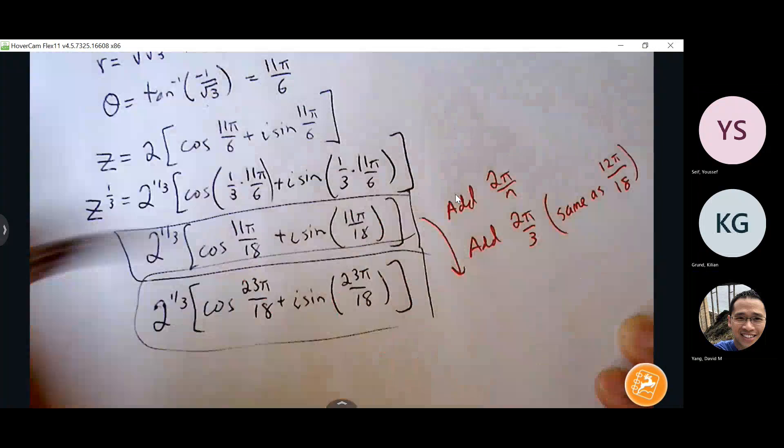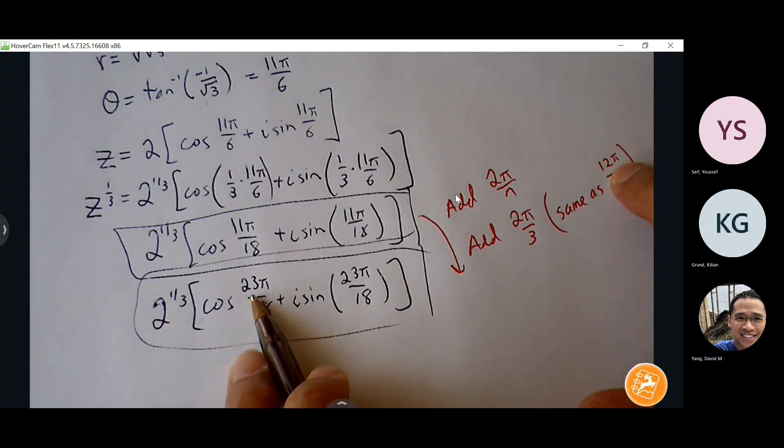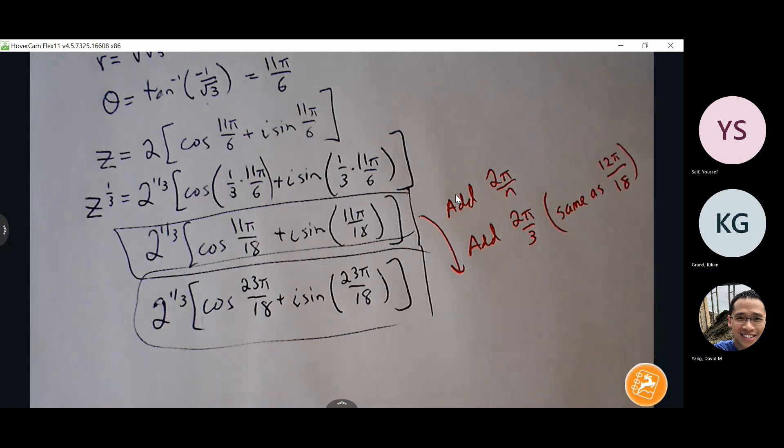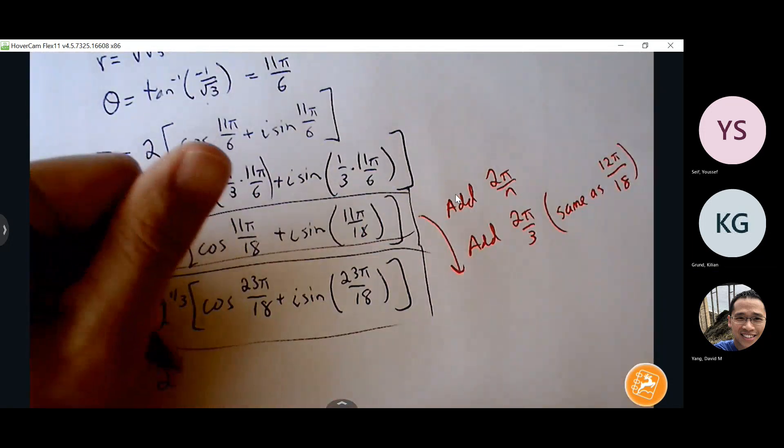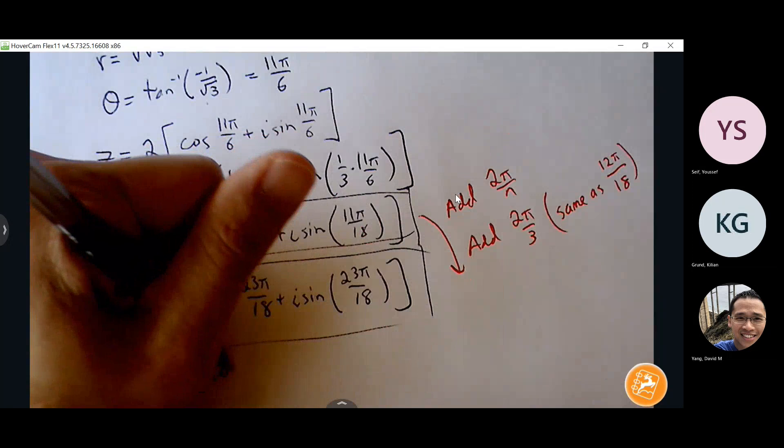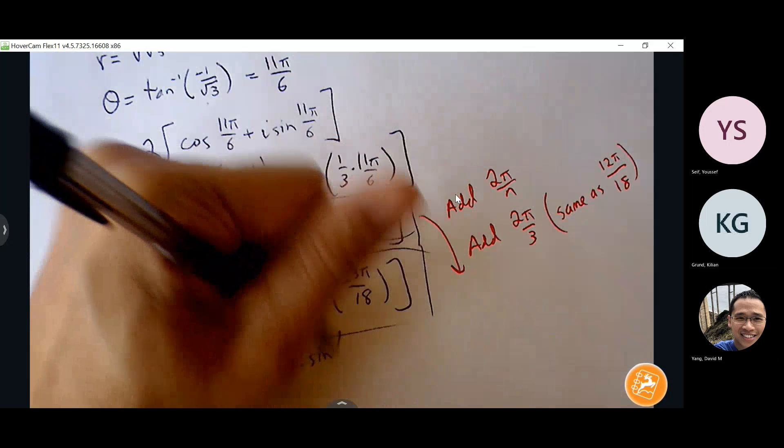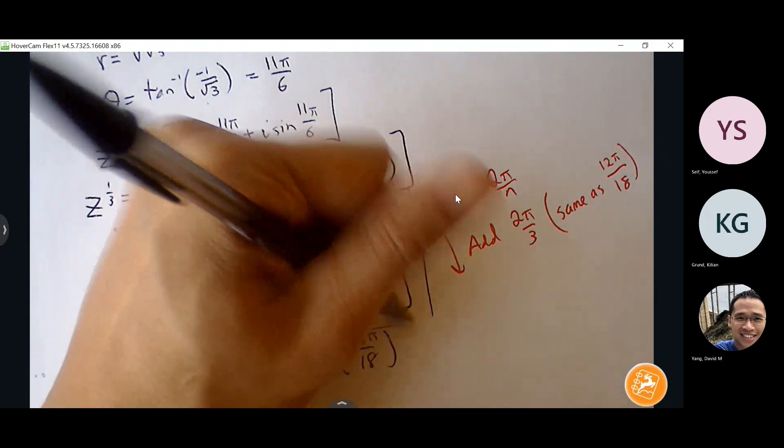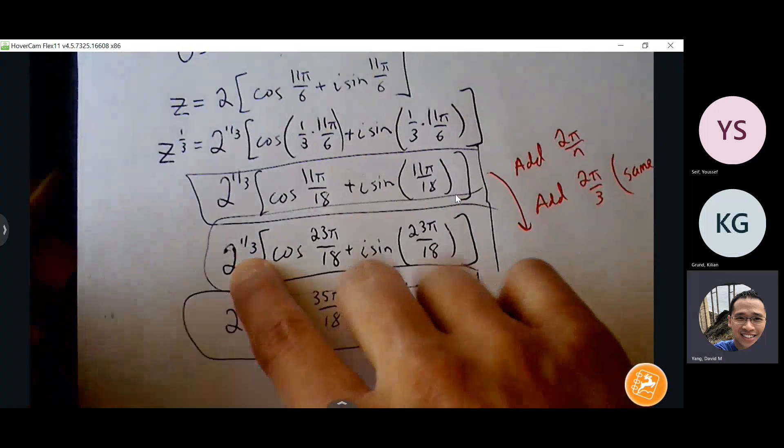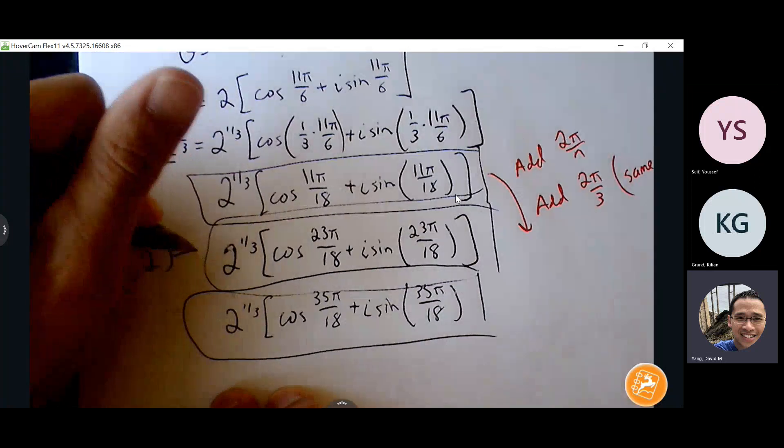Second, that's my second solution, third solution, 23 pi plus 12 pi, so that's 35 pi. So you can write this as 2 to the one third, or if you want to write it as cube root of 2, that's fine as well. It's up to you.